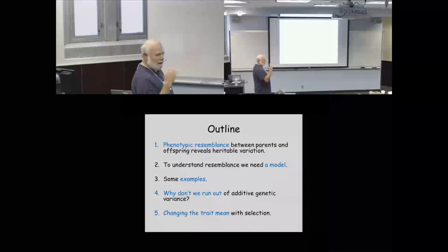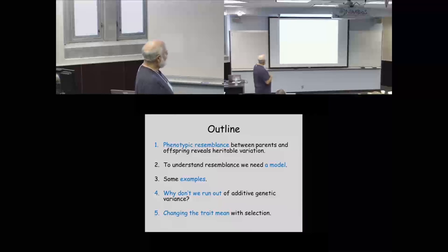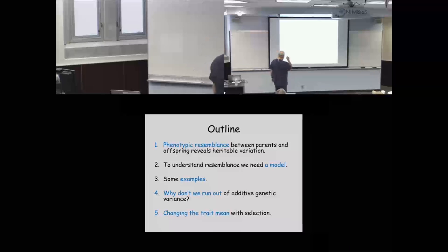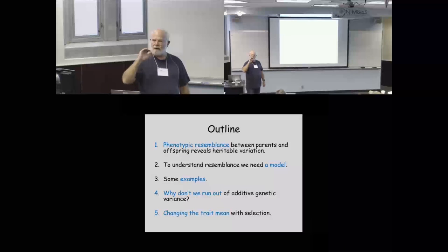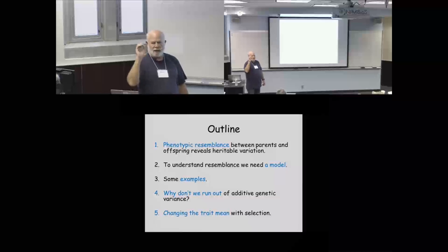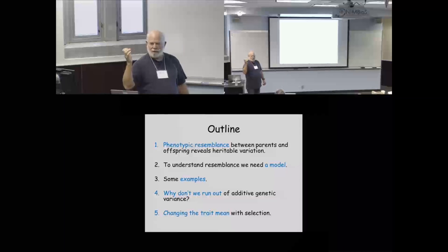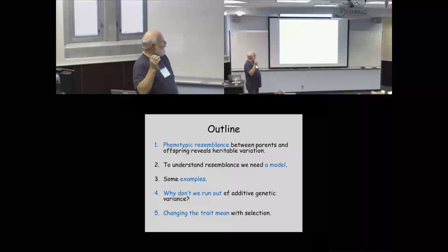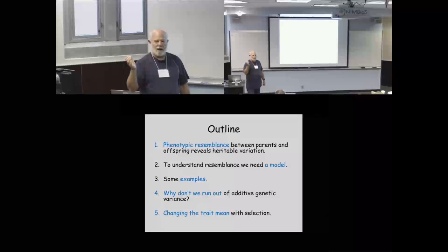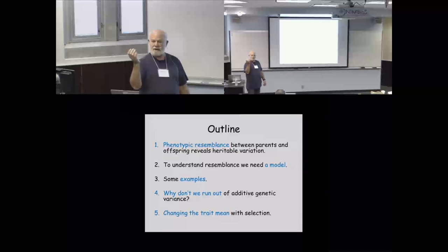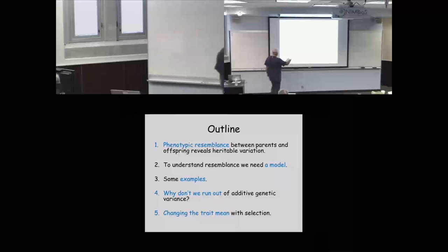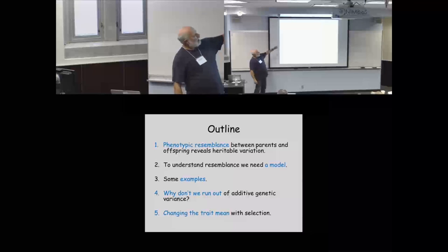To understand resemblance, we need a model derived from the underlying model of genetic effects. We're going to worry about why we don't run out of additive genetic variance — there's a simple reason we don't. We want to go to an evolutionary time dimension, not just from one generation to the next. As Jay Lush used to say, if selection is nibbling away at genetic variation each generation, why doesn't it get nibbled away to nothing?